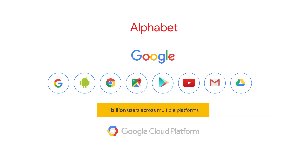However, it's not just the scale that's interesting about these products. What's interesting is the infrastructure — Google's core technology infrastructure that we had to build in order to achieve our mission. This infrastructure powers all our products. Google Cloud Platform is a suite of cloud computing services that runs on the same infrastructure used by Google internally for its end-user products.